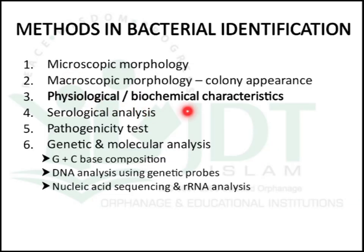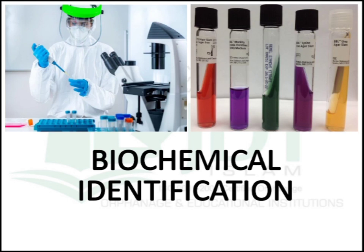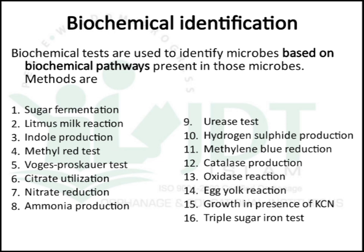Coming to the next method: physiological or biochemical characteristics. This is an important topic in our syllabus. We can study different physiological characteristics like resistance to heat, disinfectants, antibiotics, chemotherapeutic agents, and bacteriocins. Metabolism requirements include oxygen, carbon dioxide, capacity of pigments, and production of hemolysis.